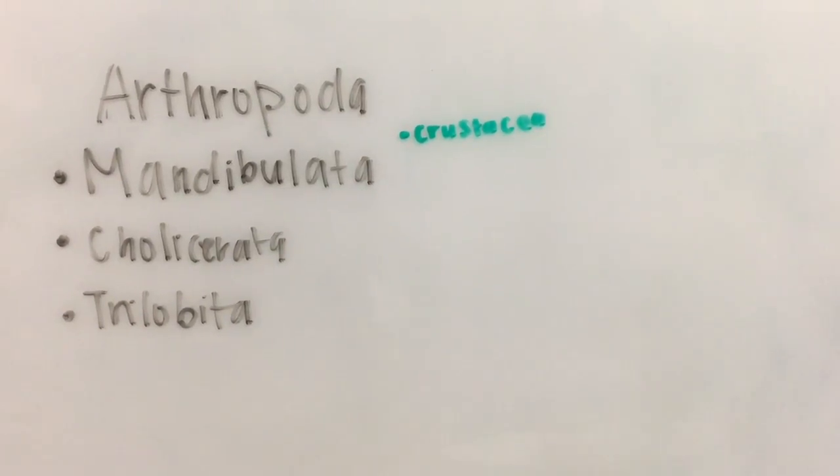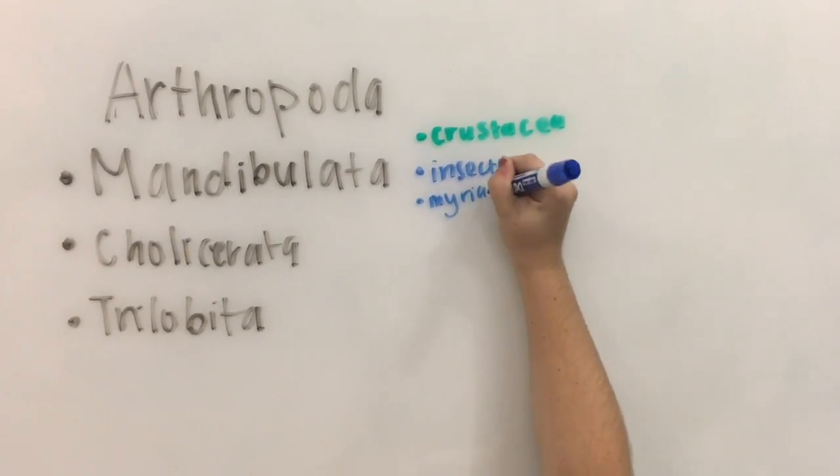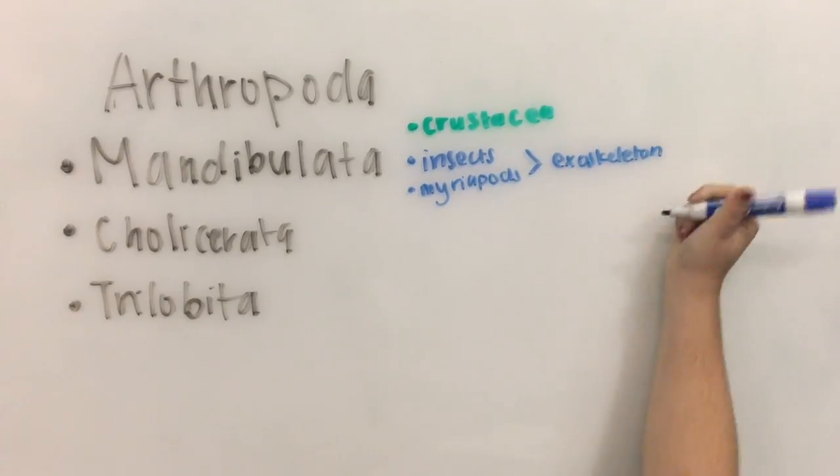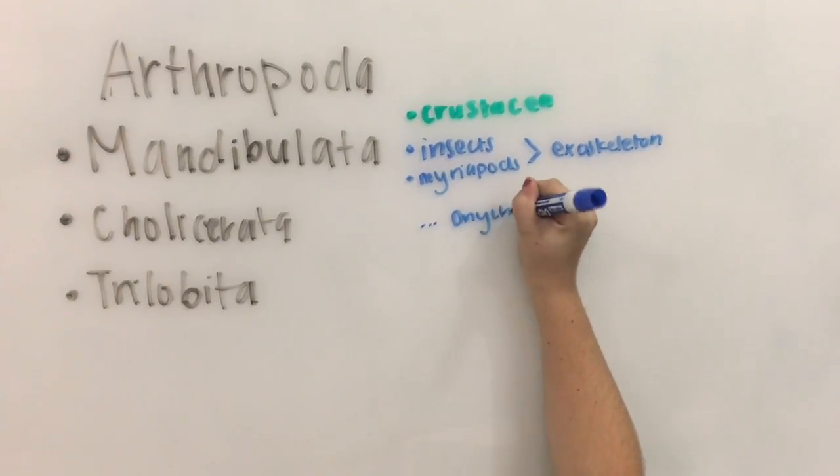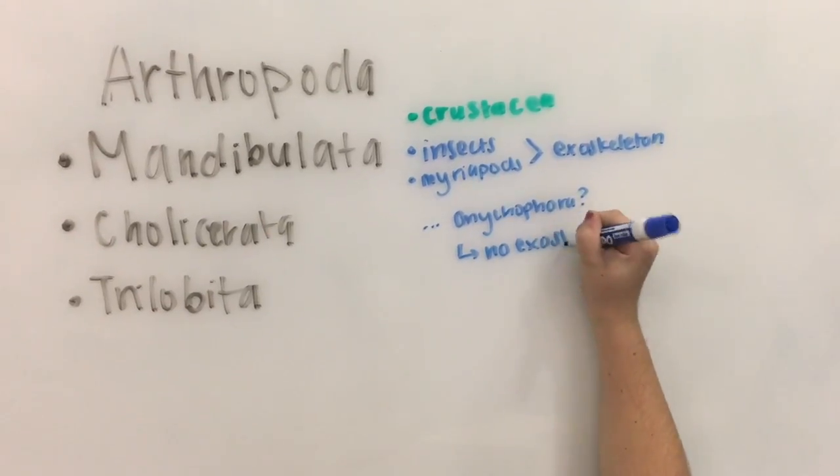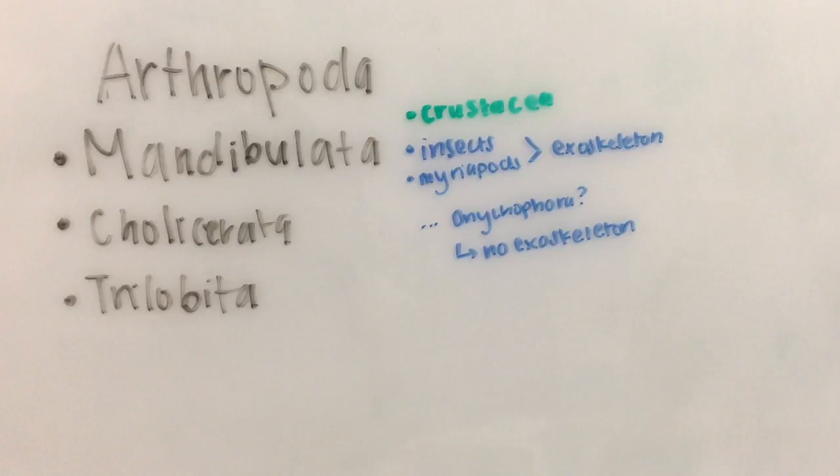Mandibulata includes all arthropods that have chewing mouthparts: Crustacea, myriapods, and insects. At least one group from these arthropods, the Crustacea, continued a marine lifestyle while myriapods and insects adopted a terrestrial lifestyle. But Boudreaux's classification scheme excludes Onychophora because they lack a true exoskeleton.